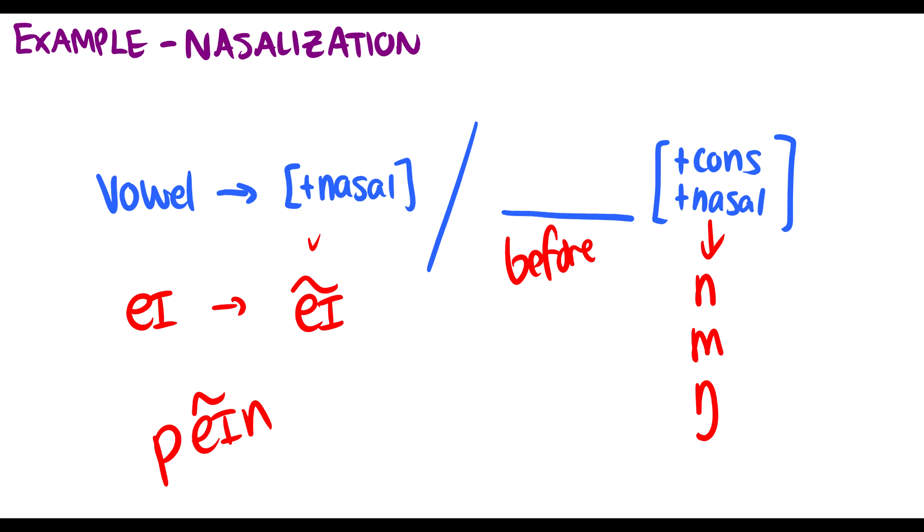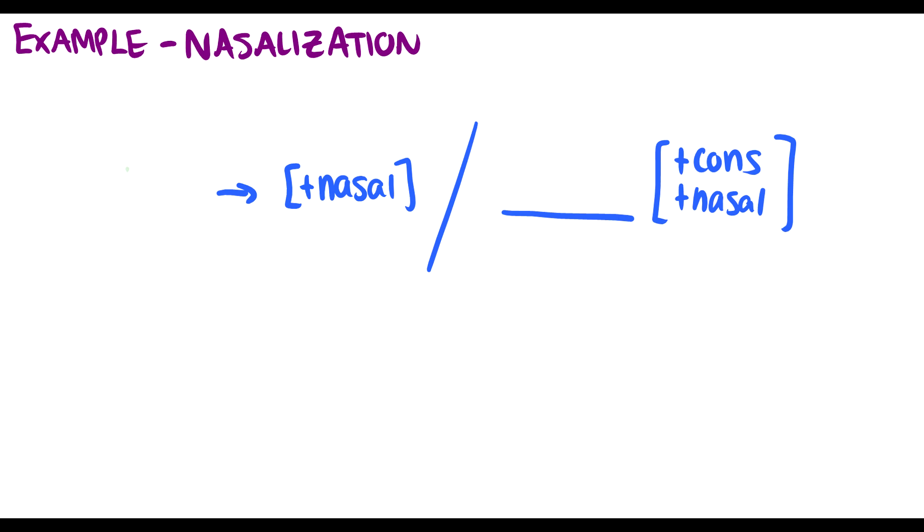And what this says is before these consonant nasals, these nasal consonants. So this set of features talks about N and M and ŋ. So for instance, in the word pain, it's saying that look, that A is nasalized. So it's pain. You got that E sound instead of A. So this is the nasalization rule. So again, let's just go over this quick again, just to really drill this in, because this is the first time you're probably seeing this kind of thing. We take a vowel.